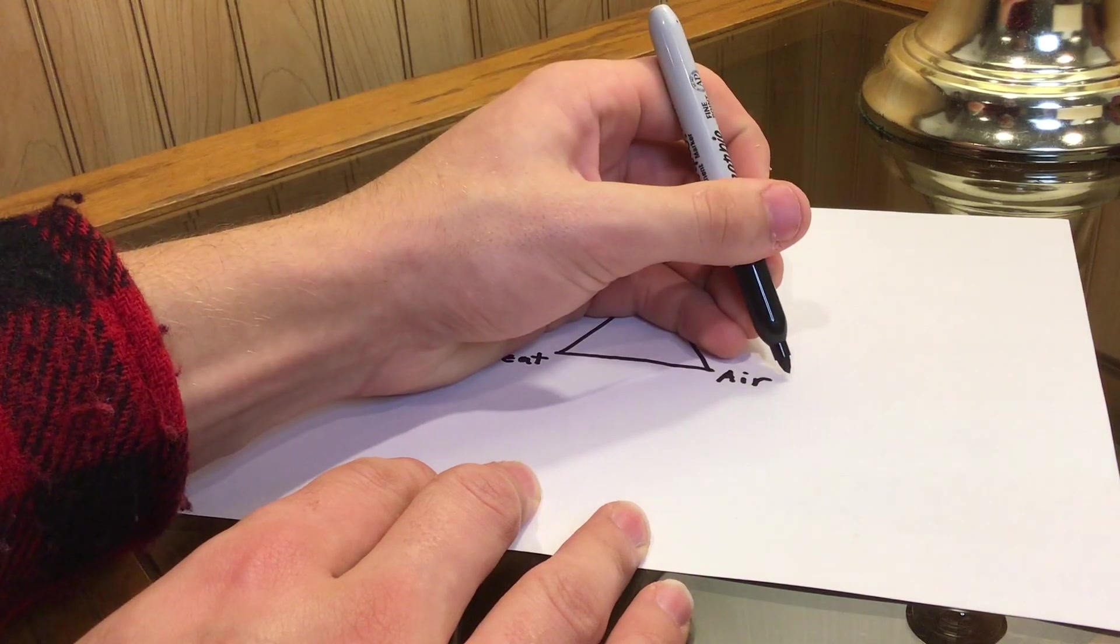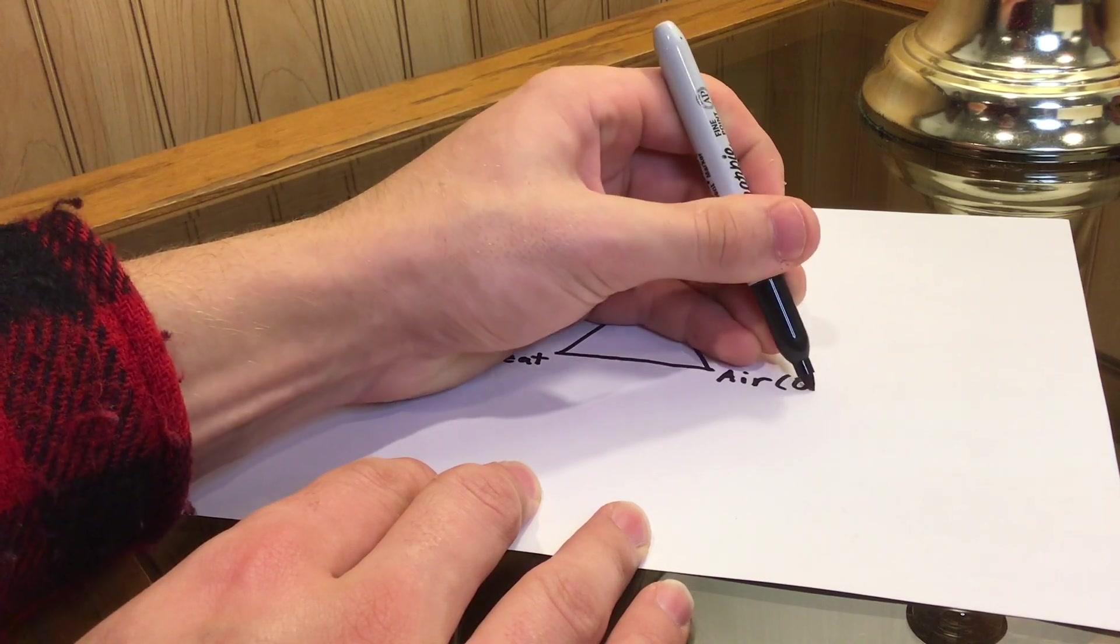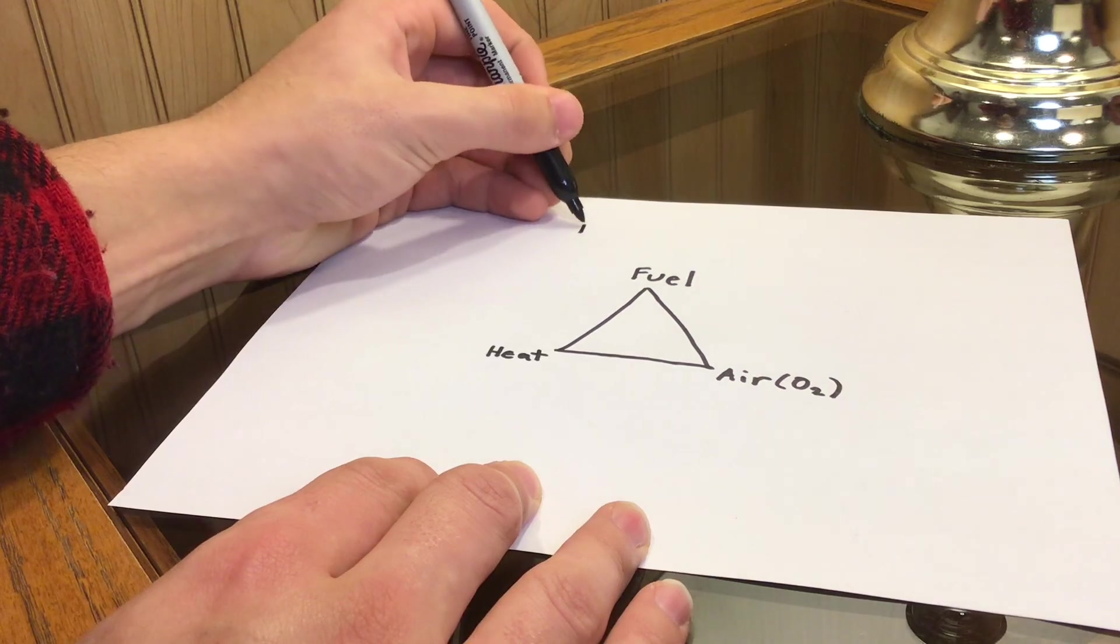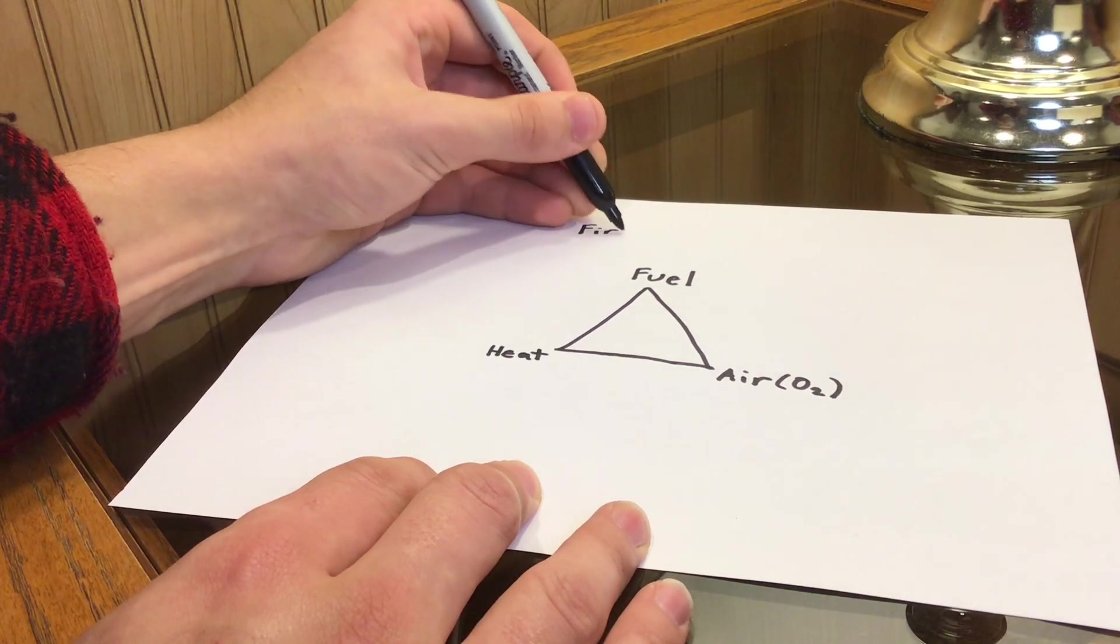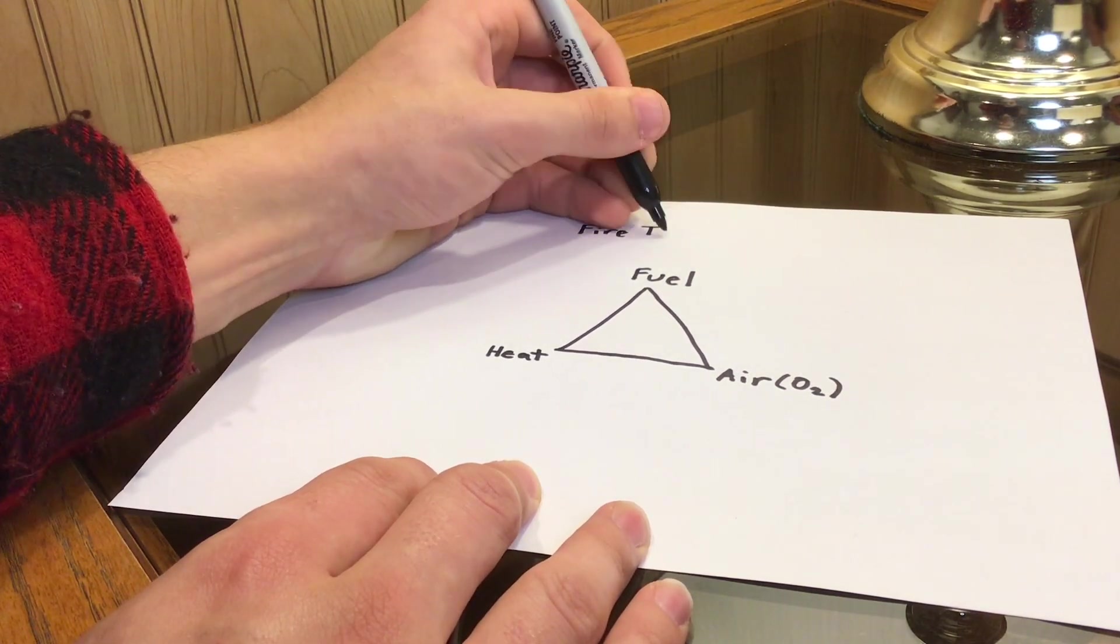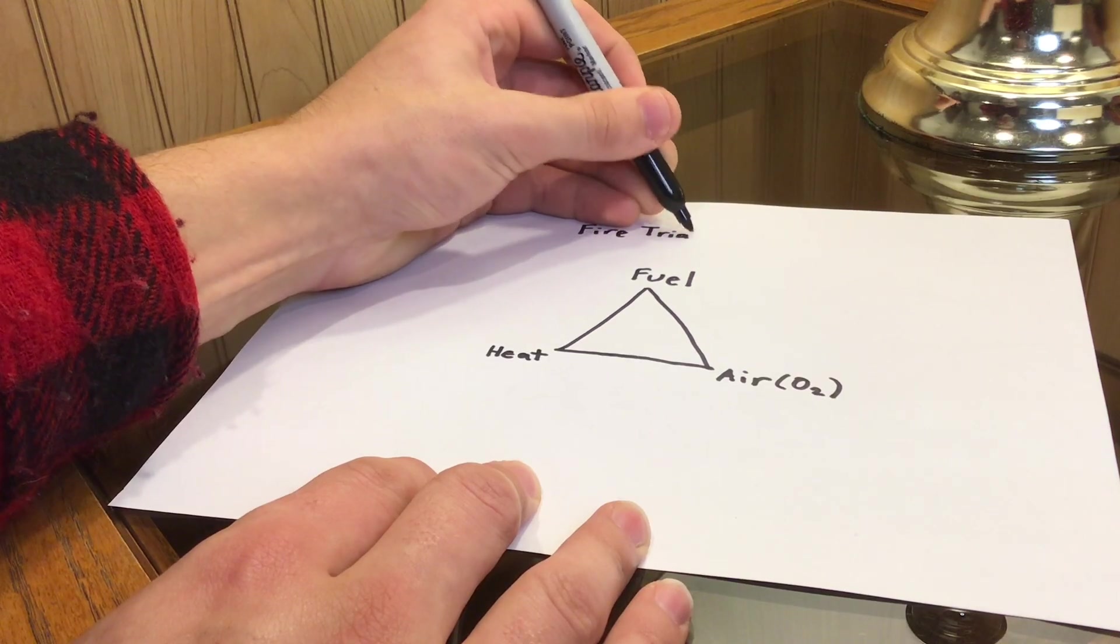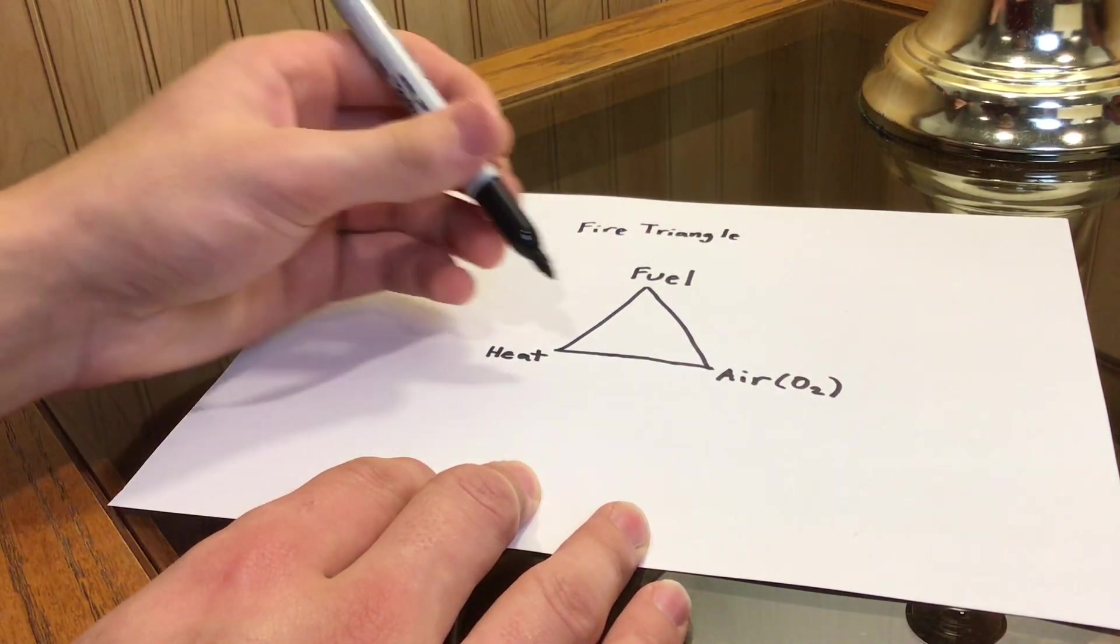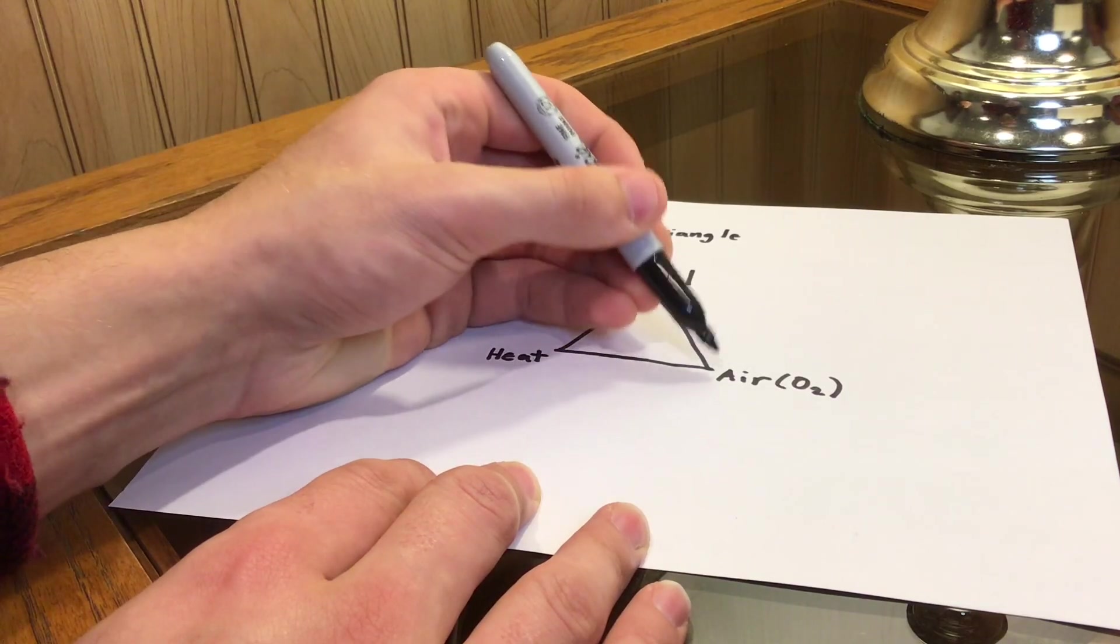In the case of a candle, the oxygen comes from the air, the fuel comes from the wax itself, and the heat comes from an external source of ignition. The magnesium that is being used is not really combusting, it is rapidly oxidizing, and perhaps it could still be called burning, but the fire triangle does not apply in the same way.